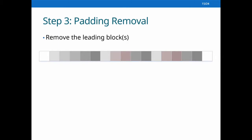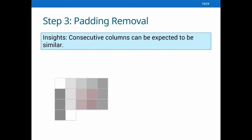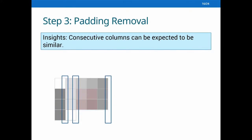In step two, we have obtained the image width. In the last step, we still need to remove the leading blocks. If the leading block is not removed, the recovered image cannot be correctly aligned, as this example shows. The alignment computation is derived from the premise that consecutive columns are expected to be similar. In the example, we find the error occurs between column 1 and column 2, so we know there is one leading block. Therefore, we designed an algorithm to transform this matrix into the original image matrix.